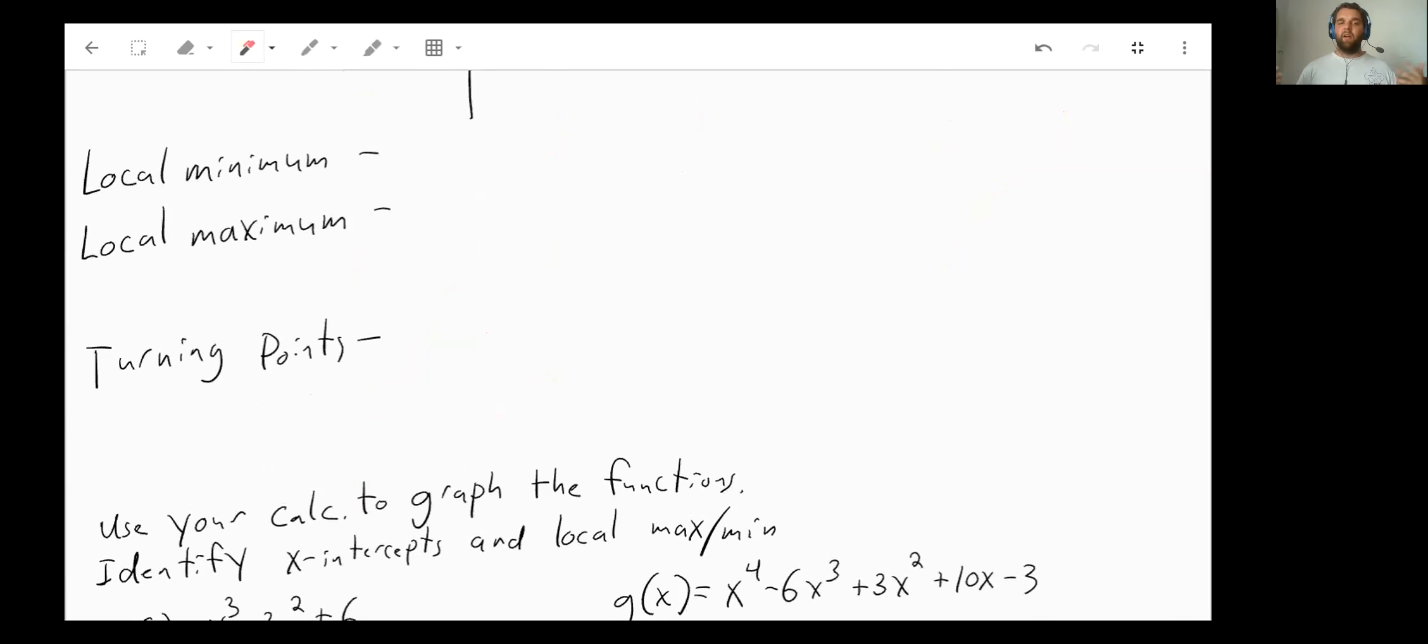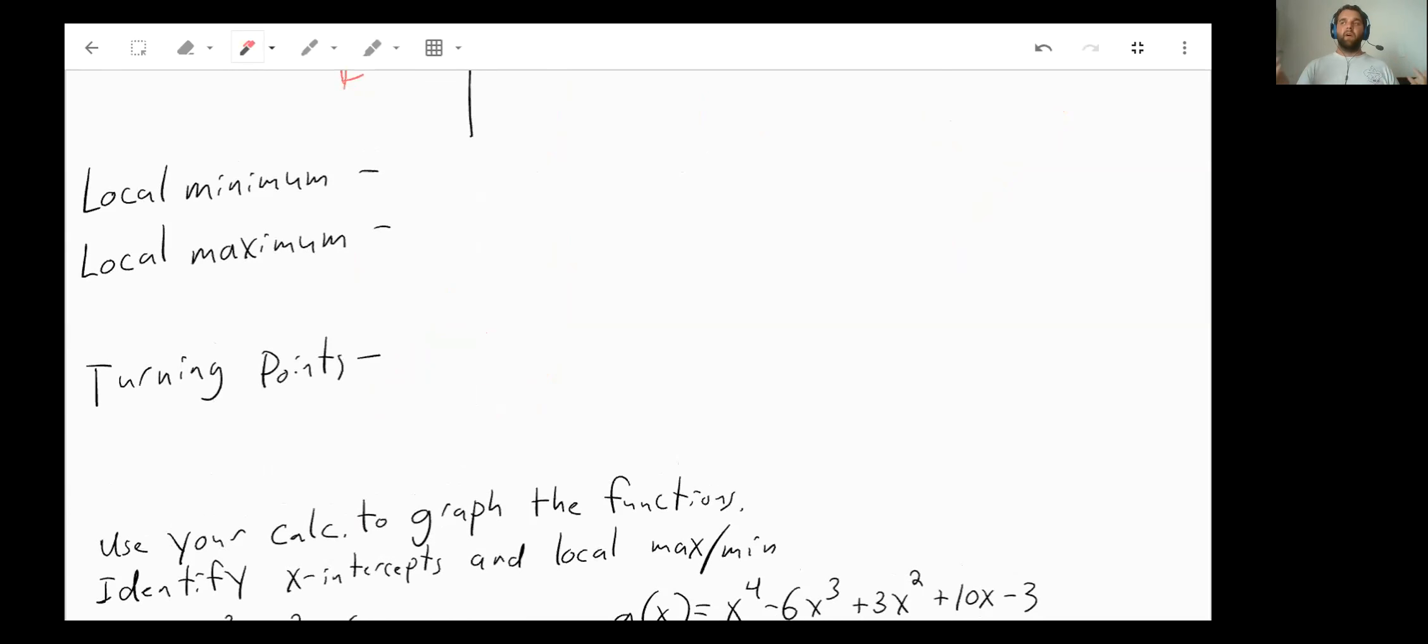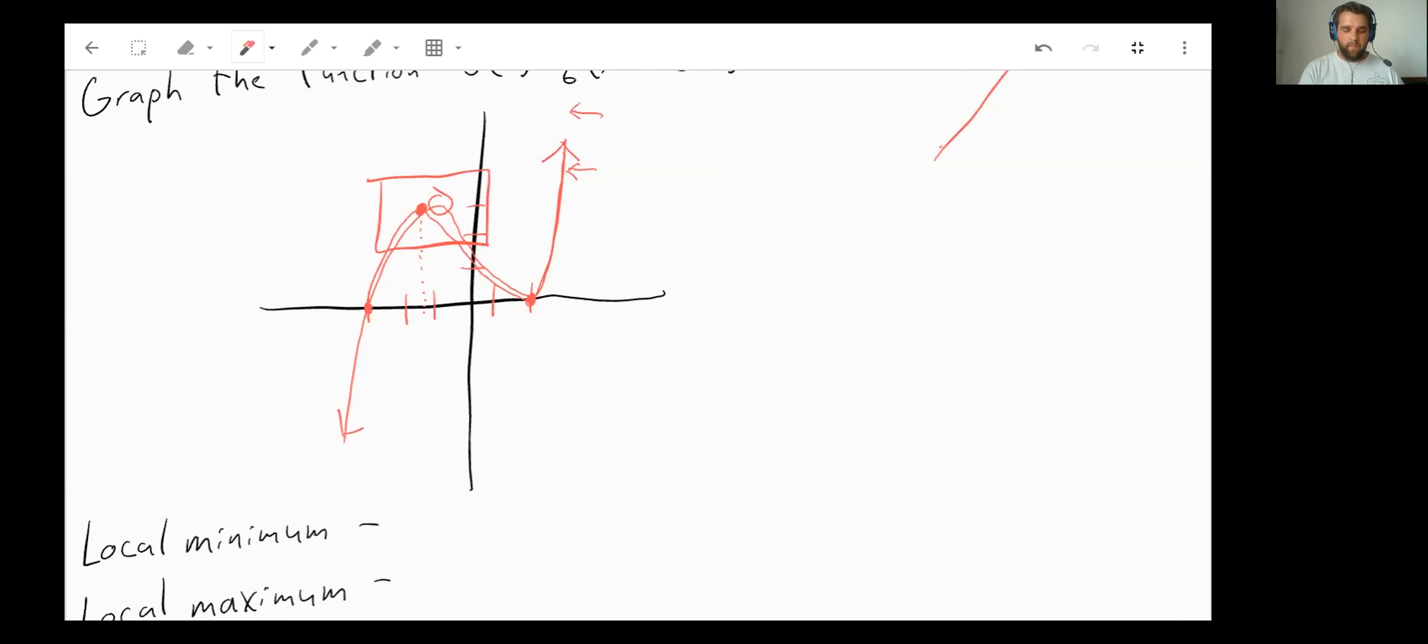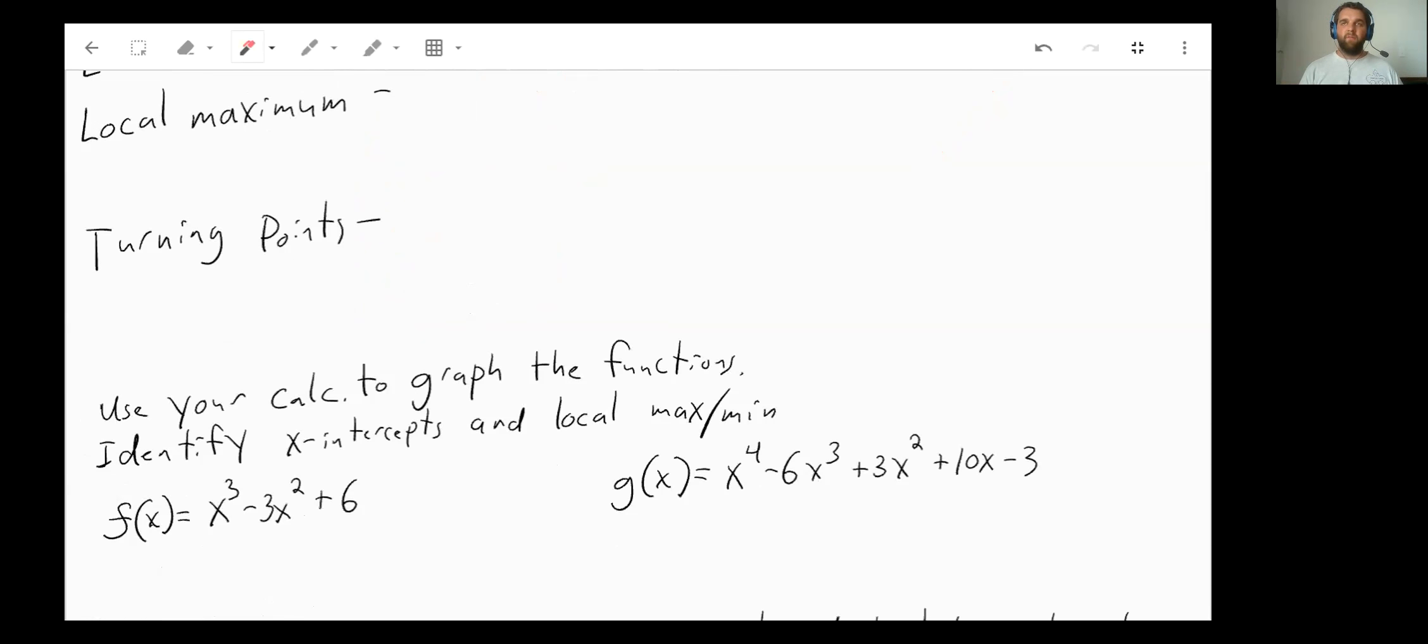So just talking about a local minimum is if you just zoom in on a spot, it's going to be that lowest most point. It might not be the lowest point of the entire function, but just of that area could be locally a minimum. Or a local maximum would be same type of thing. This is not the highest most point, because this point right here is higher, or if we go further to the right, this point right here is going to be higher. But off of the graph itself, if we just looked at this sort of portion right here, that's going to be the highest point. It's a local maximum. A turning point is another name for those local maximum or minimums. It's where it turns from going up to going down or going down to going up.